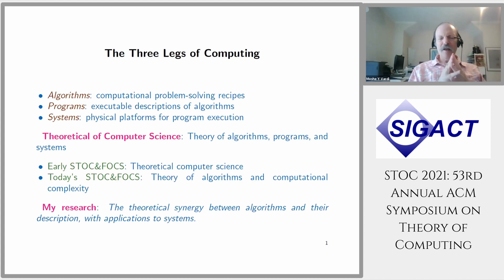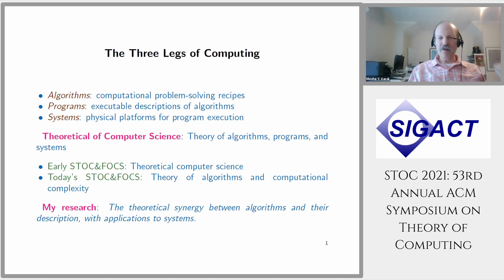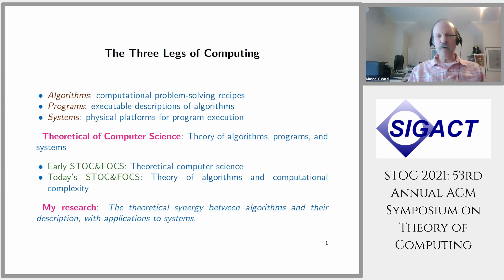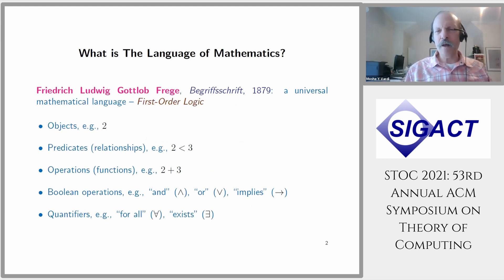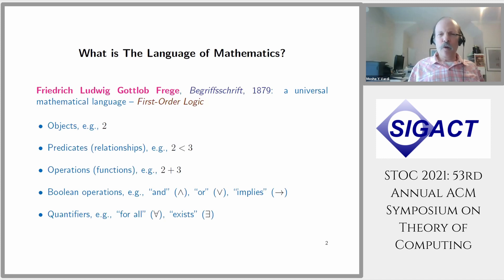My research is still trying to span the three legs, and I will describe the theoretical synergy between algorithms and their description with applications to systems. Given the limited time today, I will not talk about systems, but I will talk about algorithms and their description. To do that, I'm going to go back more than 150 years to a small book called Begriffsschrift — 'language for concept' — published by Friedrich Ludwig Gottlob Frege.